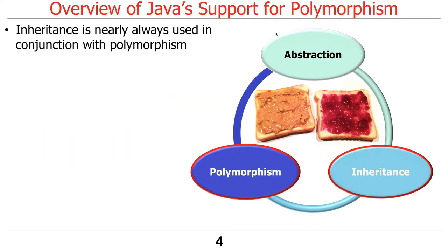Polymorphism and inheritance are pretty much almost always used together. In fact, it's pretty rare to use inheritance without polymorphism. We talked about inheritance by itself just to introduce the concept, but they really do go together like peanut butter and jelly.